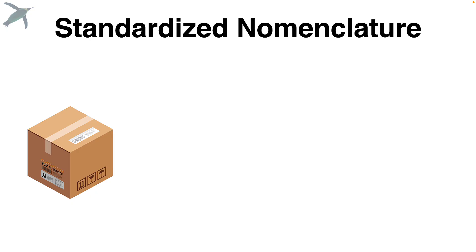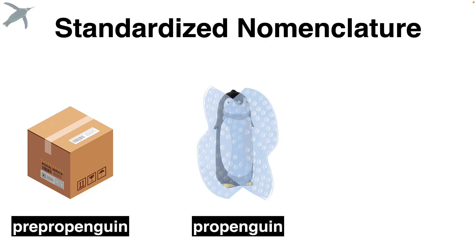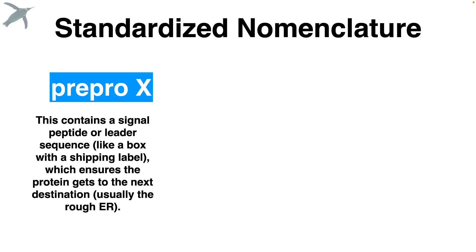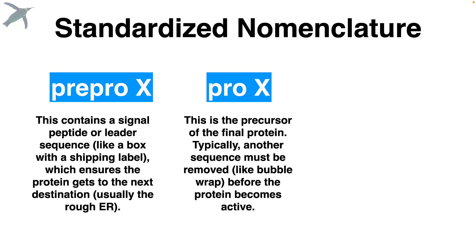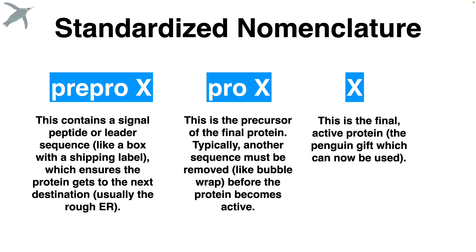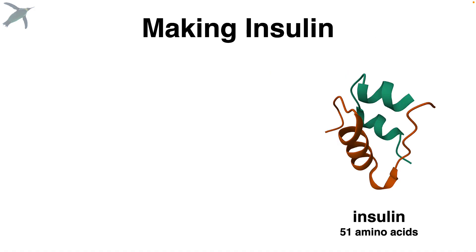We have some standardized nomenclature here. We start with the box — we call the shipping box a pre-pro penguin. The bubble wrap version of the penguin we call the pro penguin, and then the penguin in its final form we just call penguin. Pre-pro X contains a signal or leader sequence — this is the box with the shipping label that makes sure the product gets to the right place, usually the rough endoplasmic reticulum. Pro X refers to the precursor of the final product, like the bubble wrap around the penguin. And X is the final active protein. So the making of insulin has multiple steps.